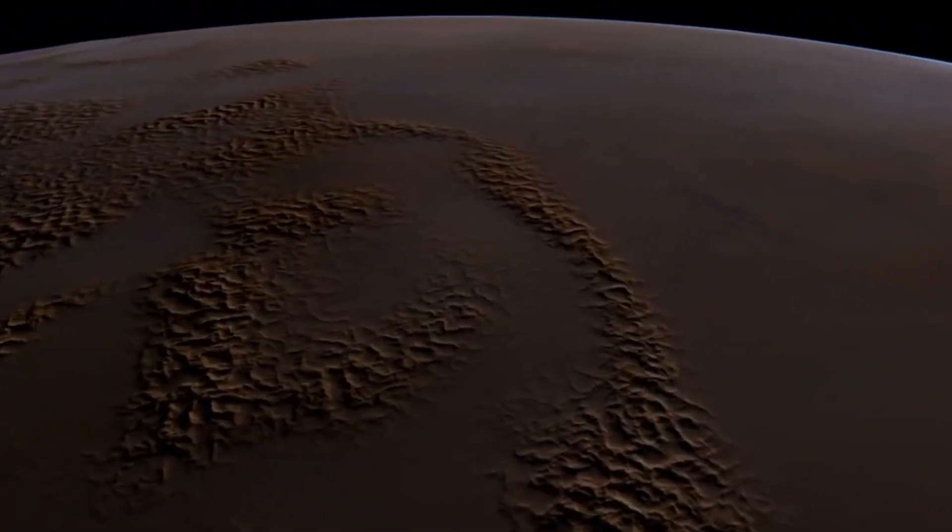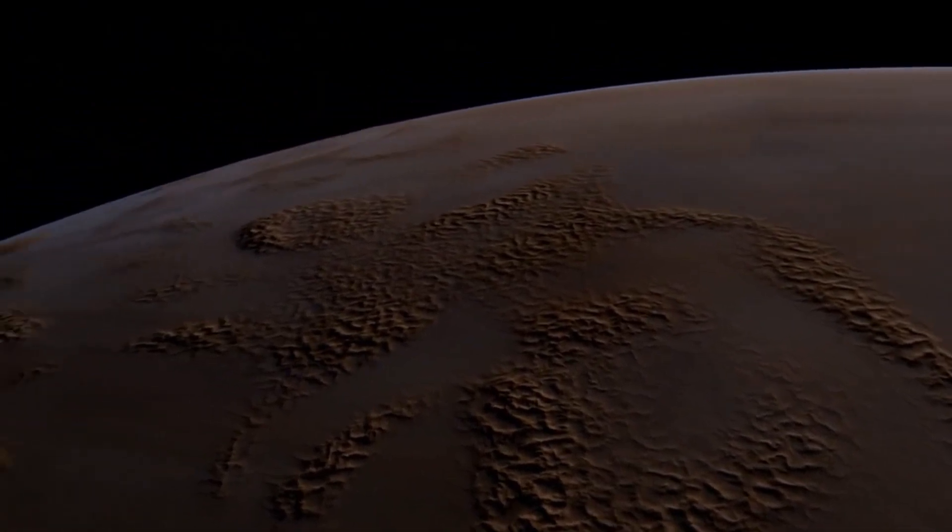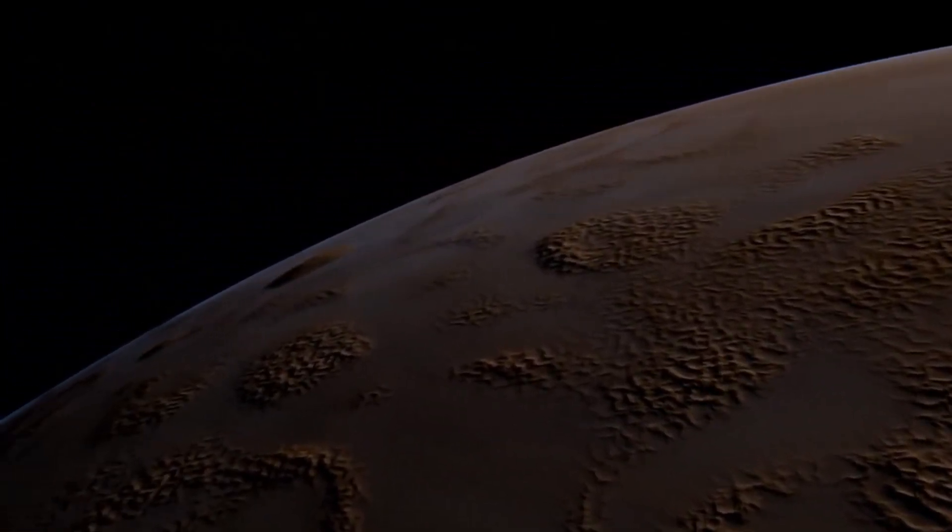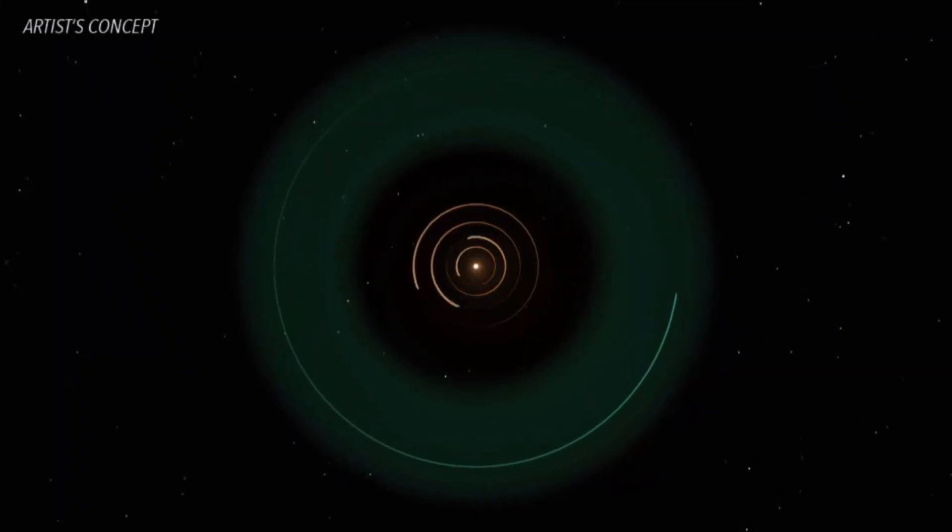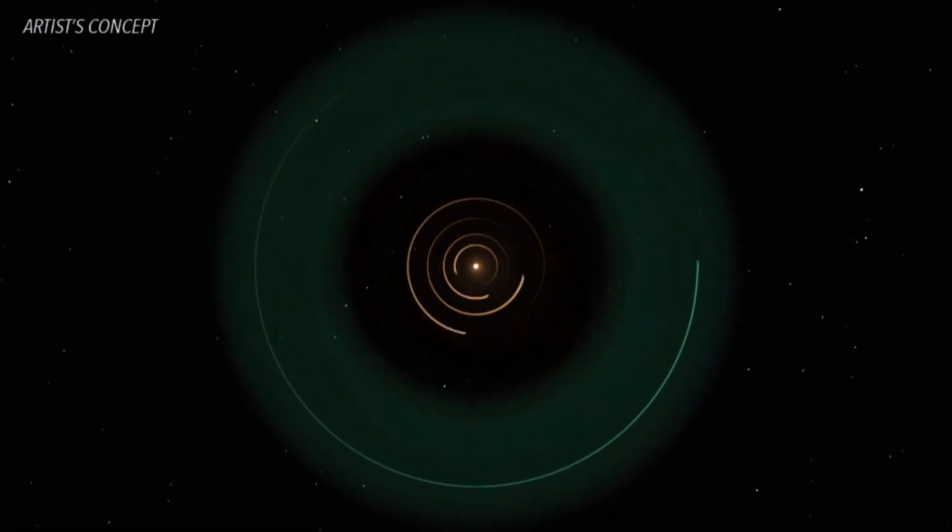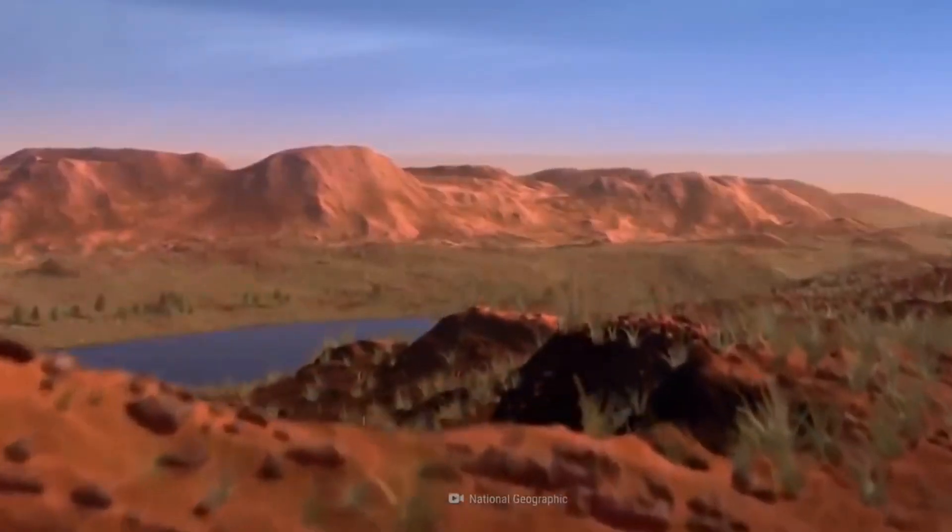Super Earths have more mass than the Earth but resemble Earth on many aspects. They mainly compose of rocks and they orbit in the Goldilocks Zone, which is the potent zone for existence of water or even life.